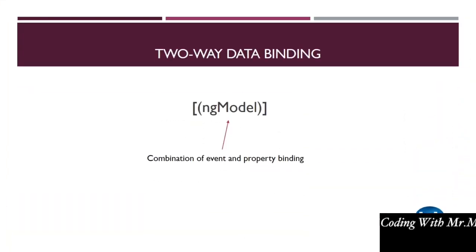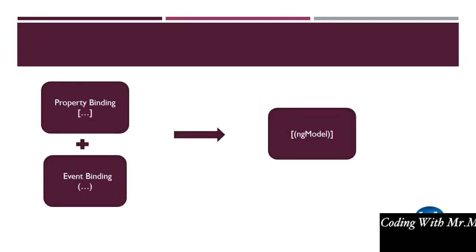The latest versions of Angular have a very interesting concept that combines event binding and property binding together, called two-way data binding. Using square brackets and round brackets together with the keyword ng model, we can perform two-way data binding. It's a replacement for what was two-way binding in earlier Angular versions. Property binding together with event binding sum up to make ng model.